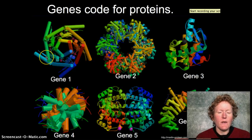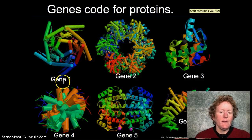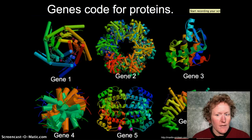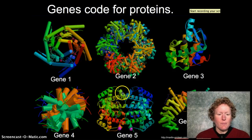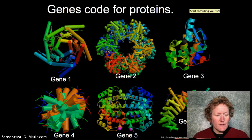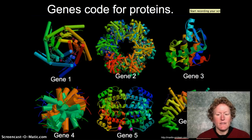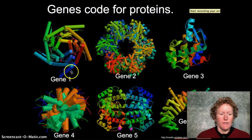Each gene codes for a protein. So if you want this protein, you want to express this gene. If you want this other protein, you're going to want to express this other gene. You can see that proteins take on many forms — we have thousands and thousands of different proteins in our body, and each of them has a different gene that is expressed to build that protein.